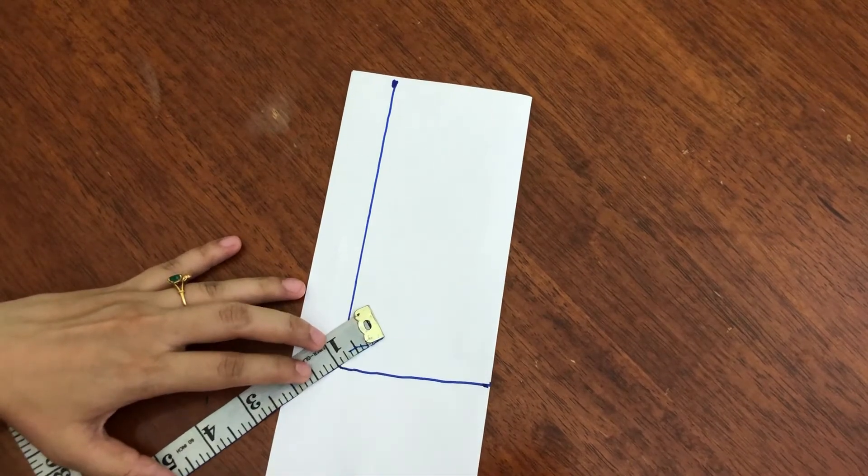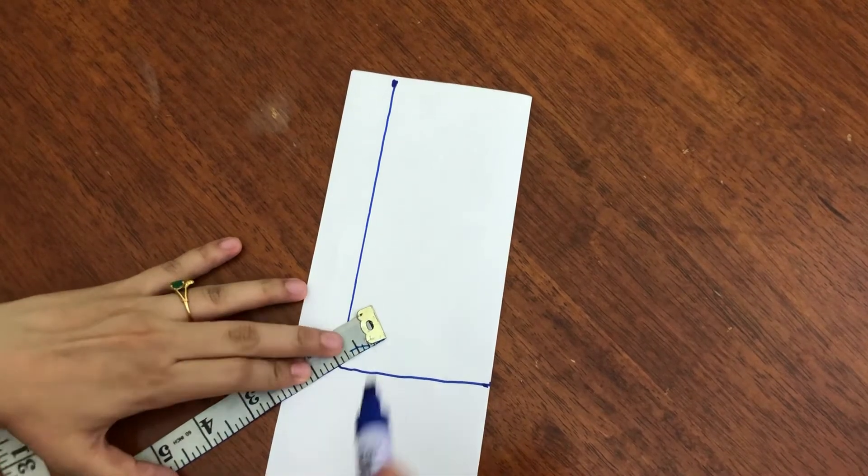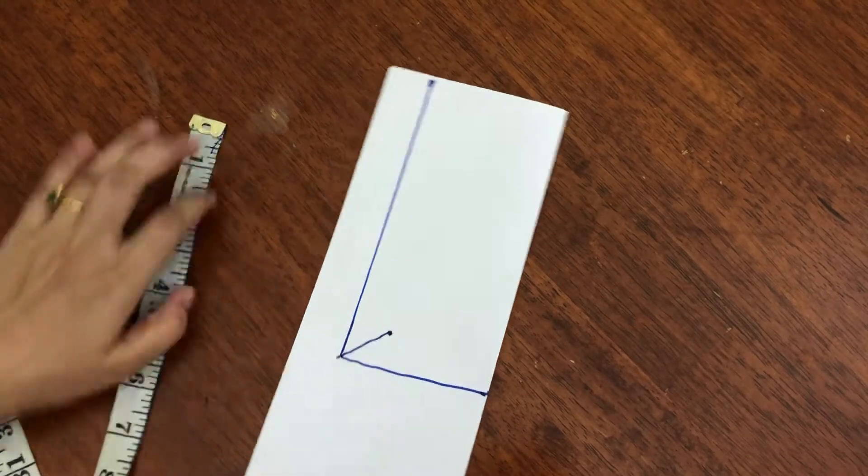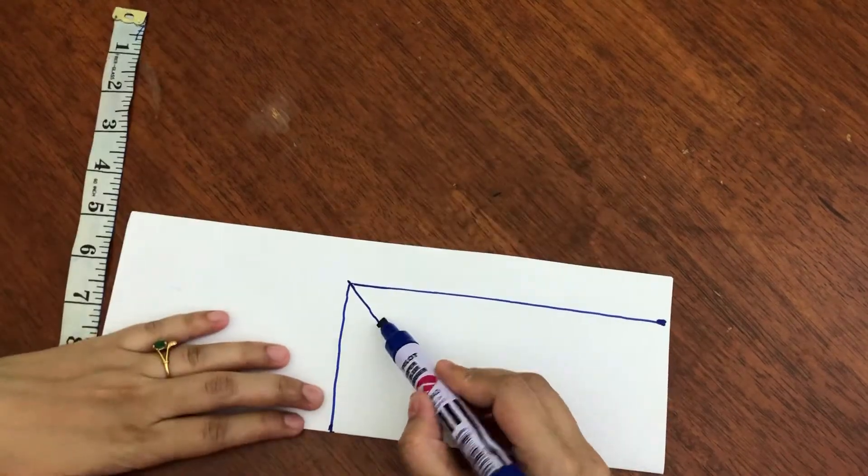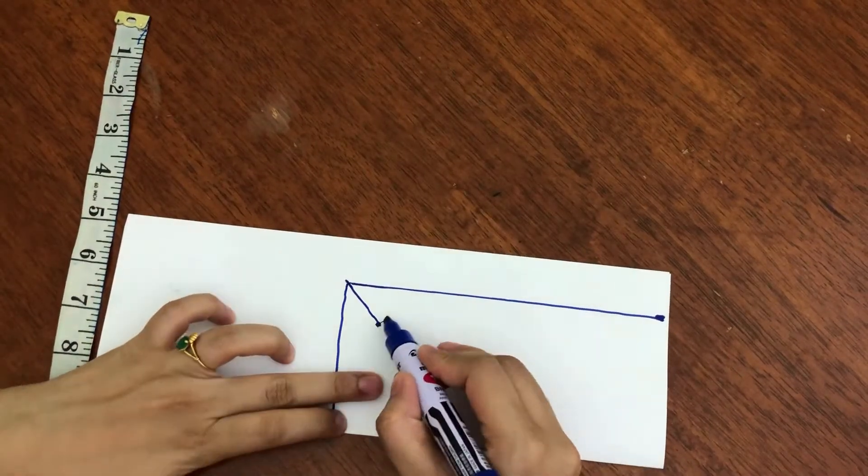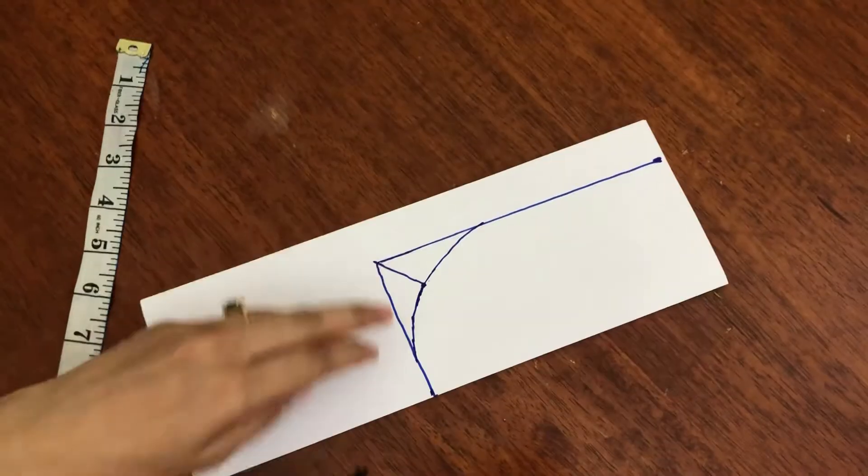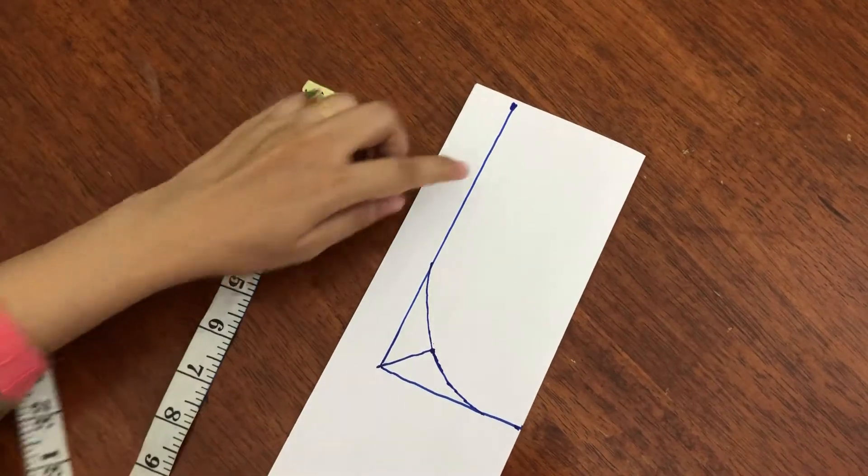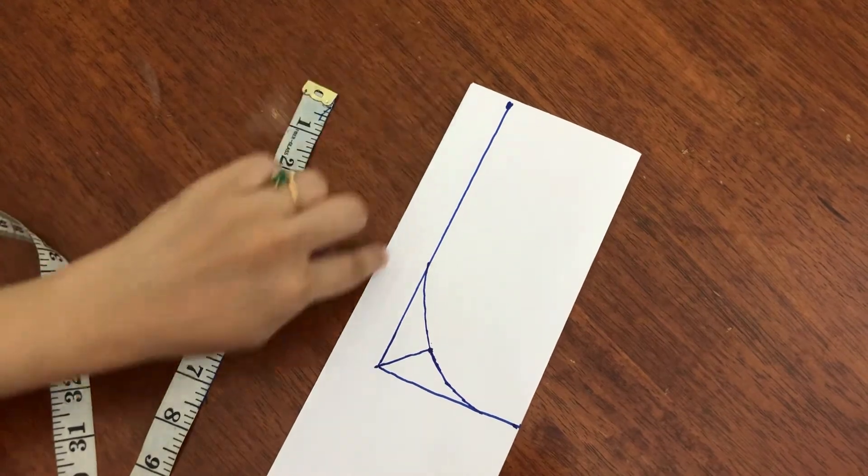I will put a 1-inch mark in this corner. Now I will give a shape from this point. Look, I have given the shape of the round neckline. Now we will cut from the outside.